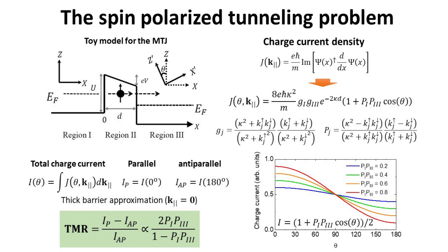This concludes our discussion on the basics of the tunneling magnetoresistance effect in magnetic tunnel junctions. In the next video, we are going to briefly discuss the TMR in a realistic system — the magnesium oxide-based MTJ. Stay tuned and subscribe so you will be notified of our future episodes.